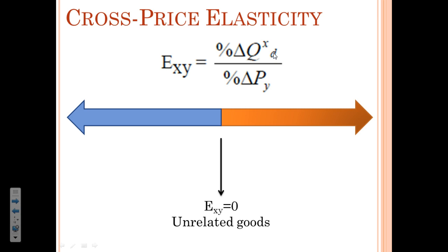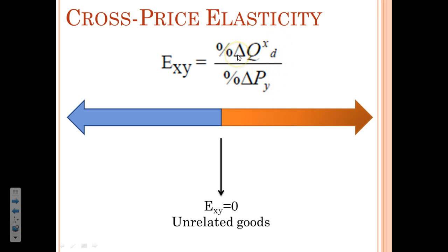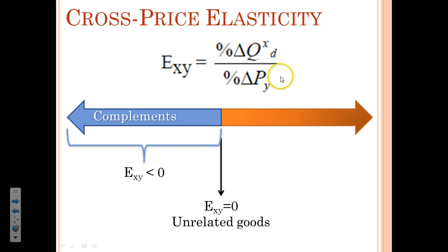But let's look at some related goods and see what happens. If the price goes up for one and the quantity demanded goes down for the other, we're saying that's a positive number in the denominator and a negative number in the numerator. So our cross price elasticity of demand is a negative number. When that happens, we're talking about complements. So if the price of peanut butter goes up, then I will demand less jelly — and that would be a negative number for cross price elasticity, because those two goods are complements.